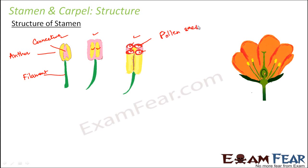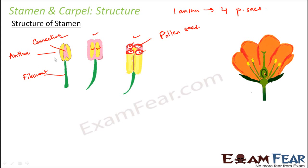Pollen sacs are the chambers present inside the anther. One anther has four pollen sacs, and each pollen sac is filled with pollen grains. These pollen grains are the male gametes.